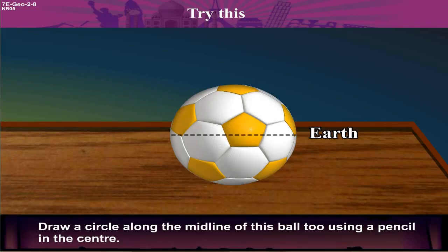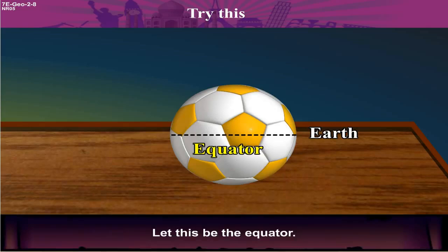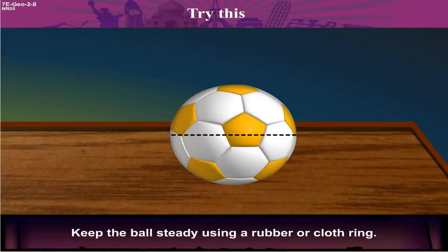Draw a circle along the midline of this ball too using a pencil in the center. Let this be the equator. Keep the ball steady using a rubber or cloth ring.